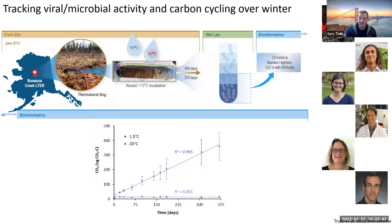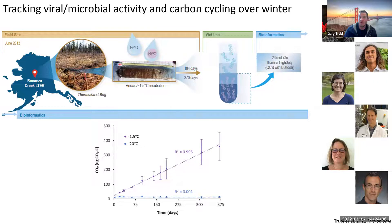This mimics in-situ winter conditions. After incubation we did cesium chloride density fractionation, sequenced them separately, and reconstructed 23 metagenomes. We also collected headspace measurements to measure CO2 production over time. In the figure at the bottom you can see in purple that we had CO2 production occurring over the full year incubation. In our control brought down to negative 20, there was no production, so somewhere in between we have the limits of life being able to respire.